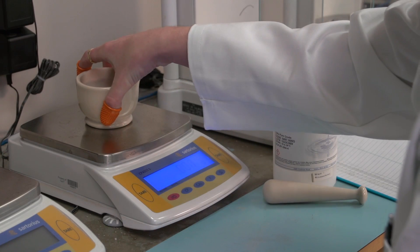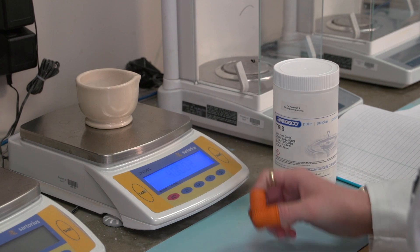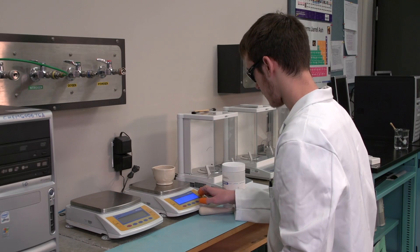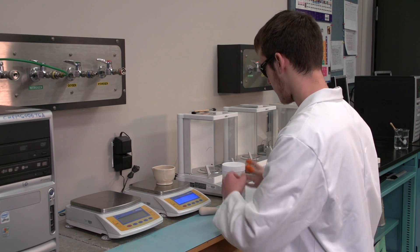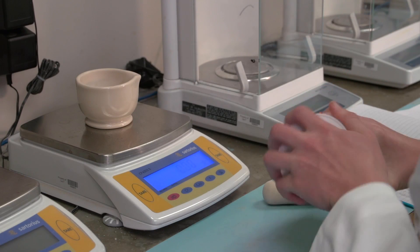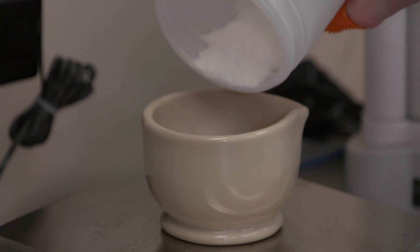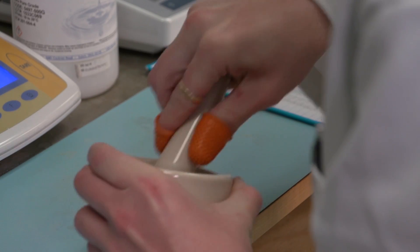To prepare the samples for analysis, the solid is ground in a mortar and pestle to speed up solution formation. Place the mortar on the top loading balance and weigh approximately one gram of the sample. Grind the sample to a fine powder.